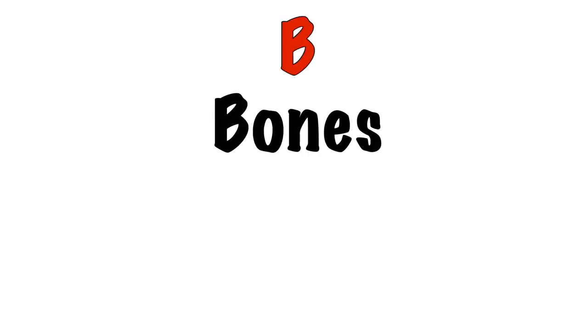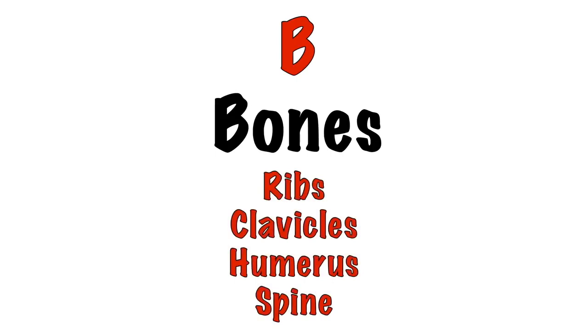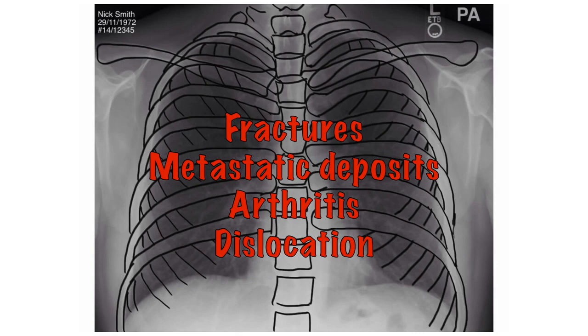B stands for bones. Look at the ribs, clavicles, proximal end of the humerus, and thoracic spine. Check for evidence of fractures or metastatic deposits, and examine the shoulder joint for signs of arthritis or dislocation.